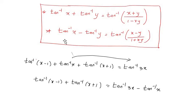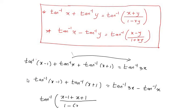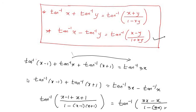On the left hand side, apply the first formula — tan inverse of x plus tan inverse of y — with x replaced by (x minus 1) and y replaced by (x plus 1): that gives tan inverse of [(x minus 1 plus x plus 1) divided by (1 minus (x minus 1)(x plus 1))]. On the right hand side, apply the second formula: tan inverse of [(3x minus x) divided by (1 plus 3x times x)].